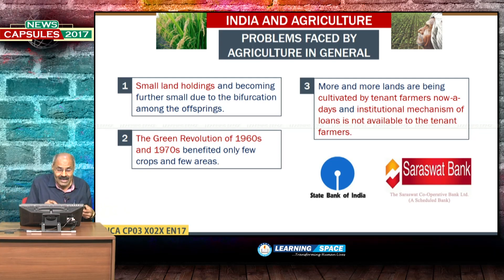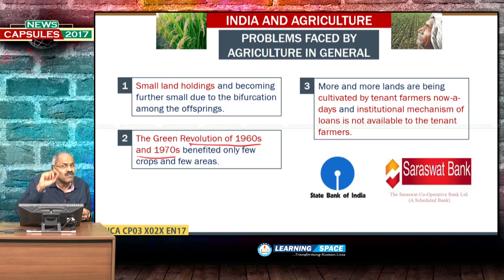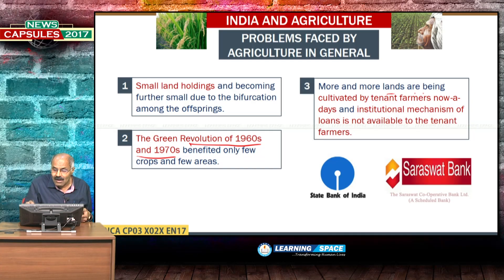The second point is the green revolution of the 1960s and 1970s. Famous persons include agriculture minister Subramaniam, Norman Borlaug, Dr. M. S. Swaminathan, and Prime Minister Indira Gandhi. Because of their efforts, the green revolution benefited India. However, there are drawbacks — it benefited only a few crops and few areas. More and more lands are now being cultivated by tenant farmers.